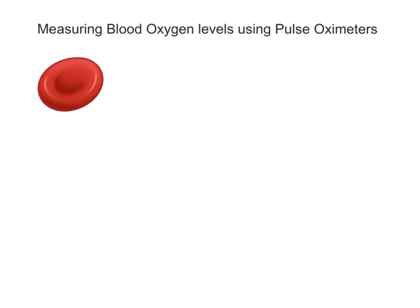Hello everyone. In this video I'm going to be talking about how to measure the blood oxygen level — or the percentage oxygen in the blood — using what's called a pulse oximeter. Pulse oximeters are devices that can be used to measure the amount of oxygen that is carried by the hemoglobin in a blood sample.